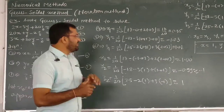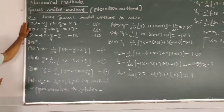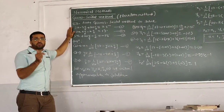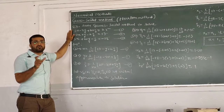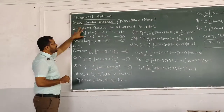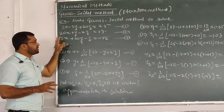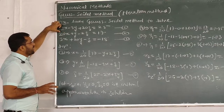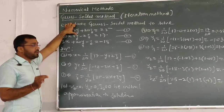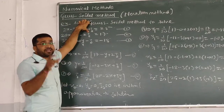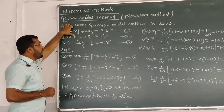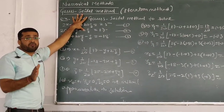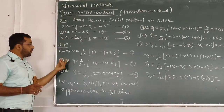Let us look at an example using the Gauss-Seidel method. We have three linear equations to solve. First, we identify which equation to use for x by finding the largest coefficient of x. In equation number 2, the coefficient of x is 20. The coefficient of y is 1 and the modulus of the coefficient of z is 2, giving 1 + 2 = 3. Since 20 ≥ 3, the condition is satisfied and we use equation 2 to find x.